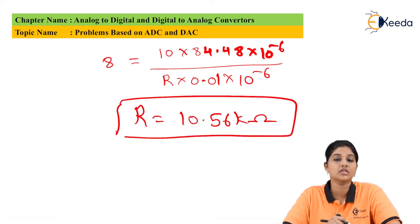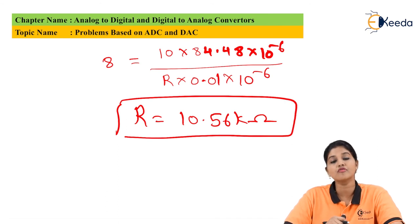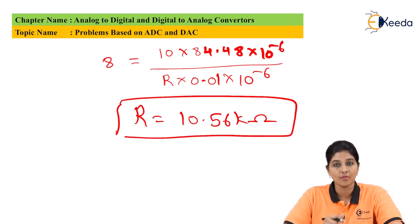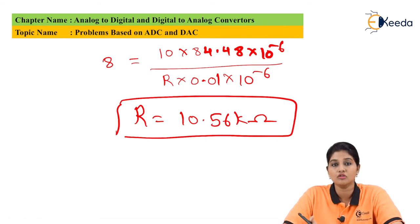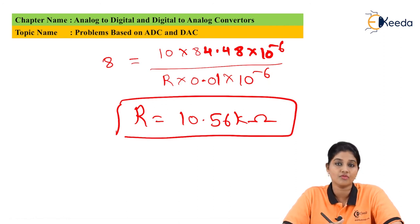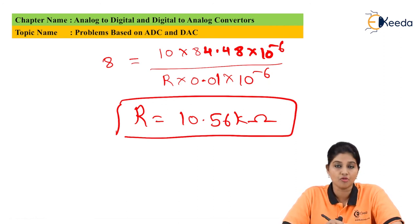By performing integration we can obtain the value of resistor. Similarly, if we want to find the value of capacitor, then the value of resistor is given, and we can easily find the values of output voltage, input voltage, resistor, and capacitor if any one of the values is given in the problem. Now let's move to the next problem.